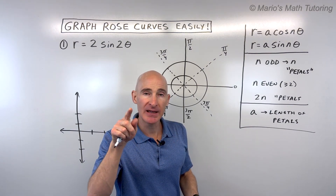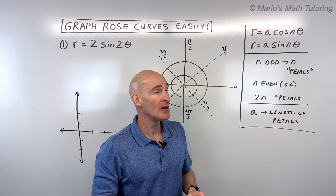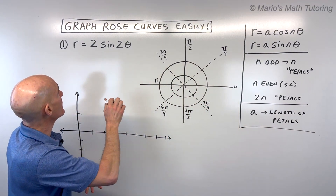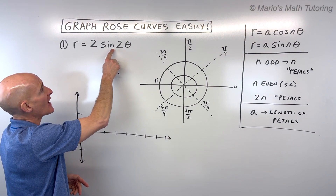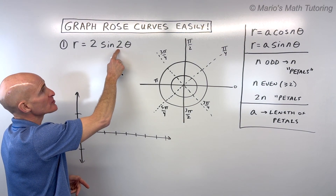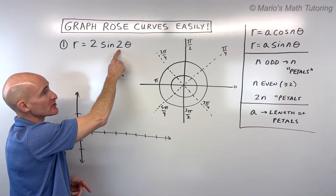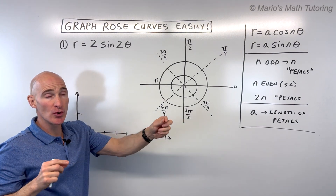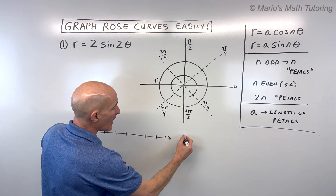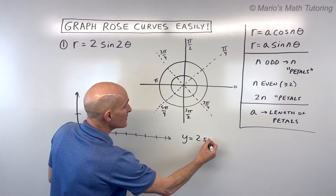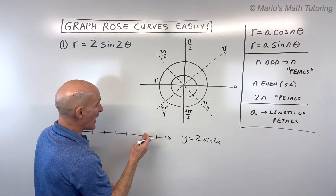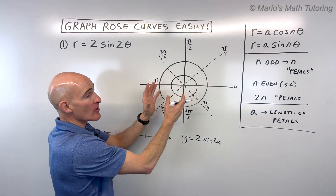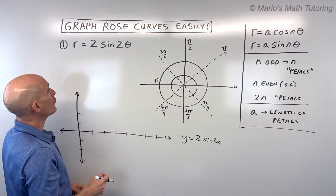Those petals are going to be evenly distributed and spaced around the graph. So for example, if you were graphing r equals 2 sine 2θ, we know there's going to be 2 times 2 equals 4 petals because n is even, so it's double the number of petals. The length of the petals will be 2. What I like to do is graph y equals 2 sine 2x in the Cartesian xy-plane and use that as a guide to graph the polar form.